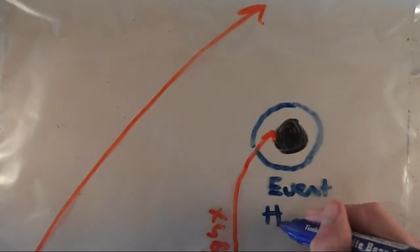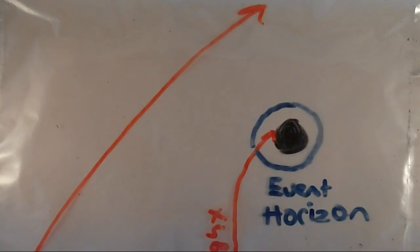Black holes have an event horizon, which is basically the point of no return. When a planet or light crosses this event horizon, they will not be able to escape.